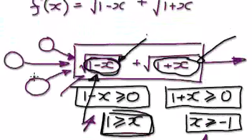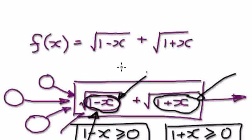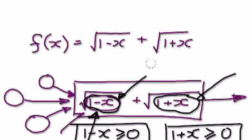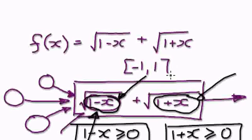So the domain for this function — let's stick to normal convention — the domain will be negative 1, comma, positive 1. So this here is your domain.